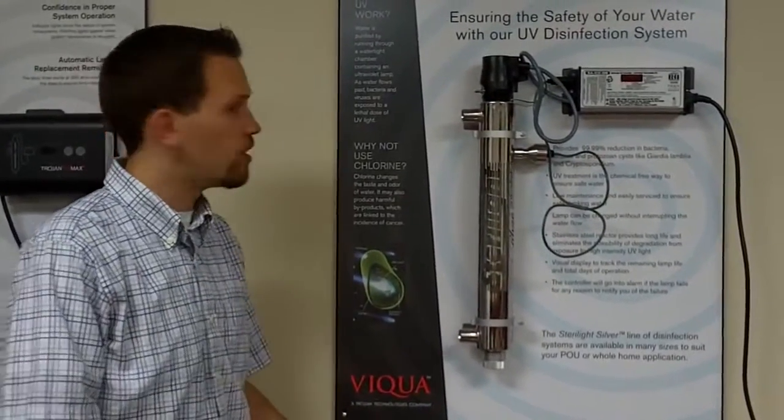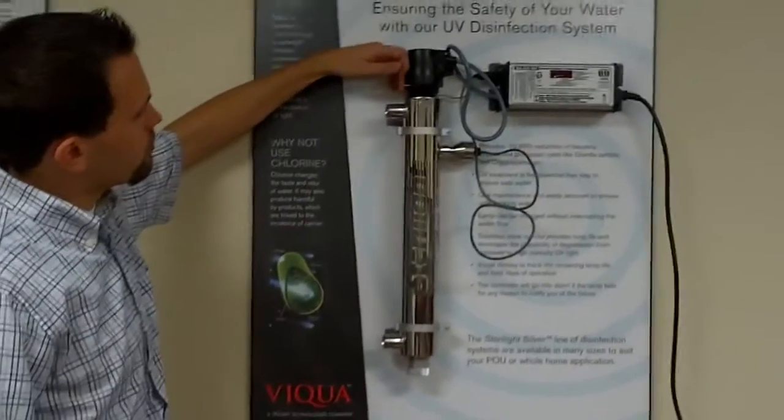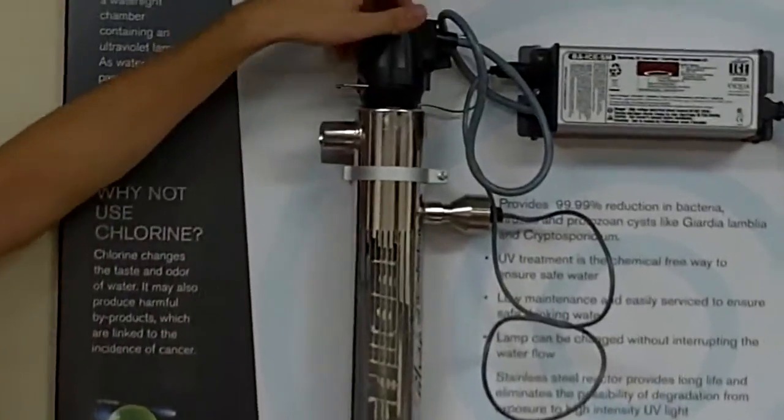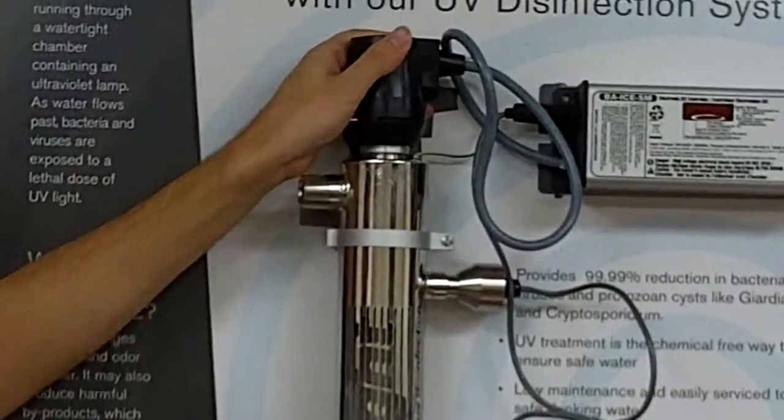So once you've let it sit for a few minutes, the first thing that you need to do to start replacing your lamp is to pull this clip right out away from the chamber, and that enables you to just lift straight off this connector.